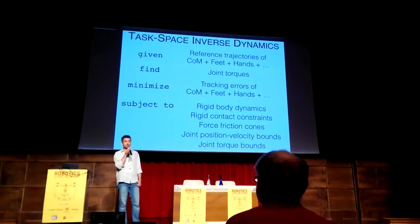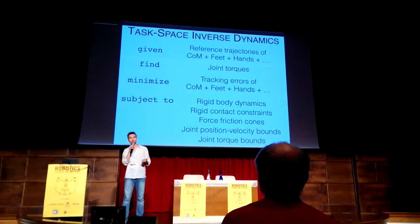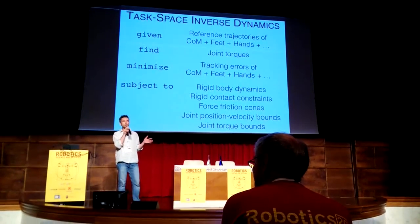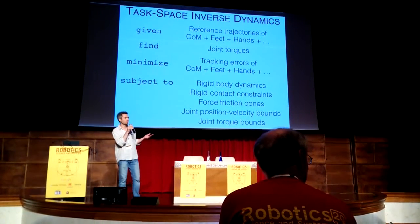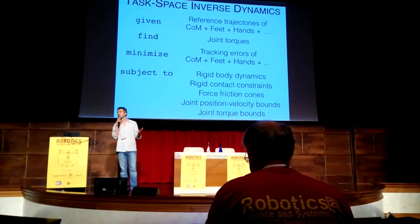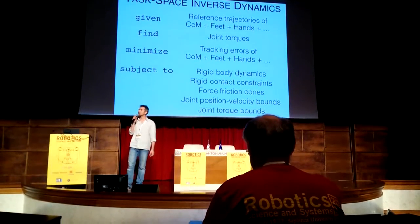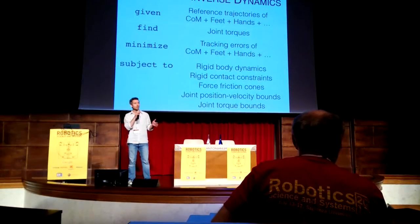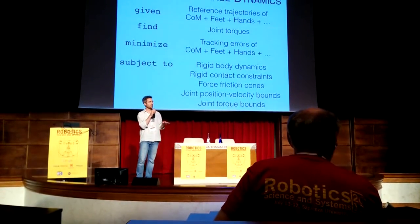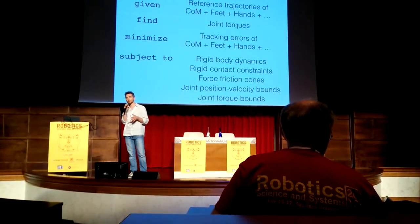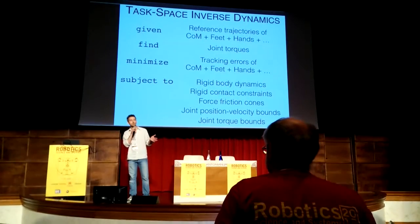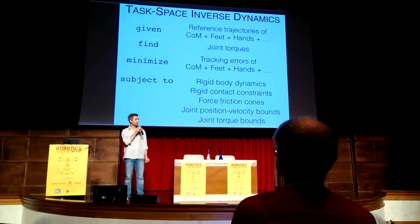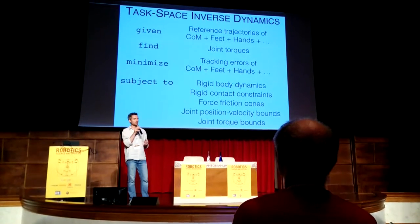It's an optimization-based control framework that is typically used for torque-controlled robots. It takes as input some reference trajectories for the points of your robot that you want to control — for instance the feet, the hands, and the center of mass — and then it finds the joint torques that minimize the tracking errors for all these trajectories while satisfying the dynamics of your system and ensuring that you have contact forces inside the friction cones and joint positions, velocities, and torques within bounds.